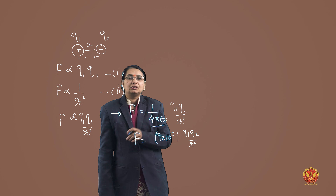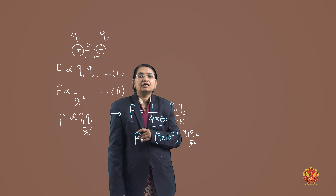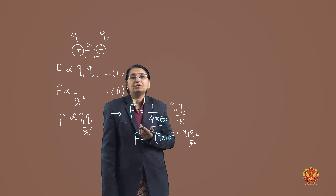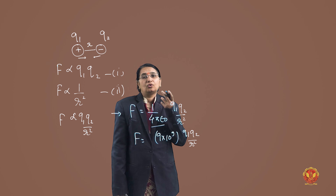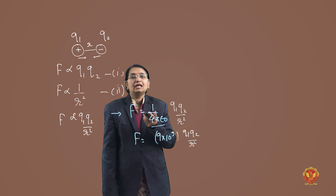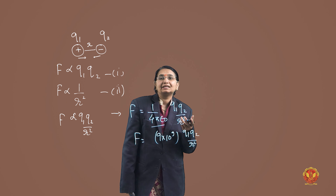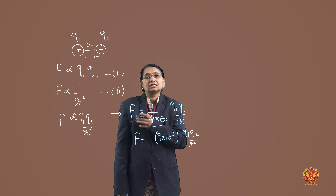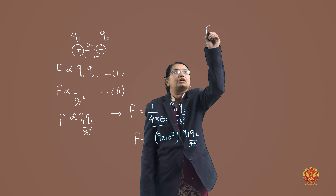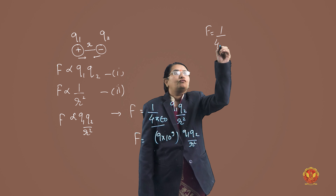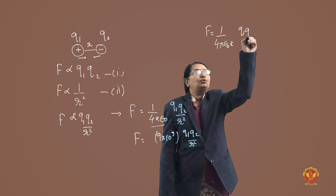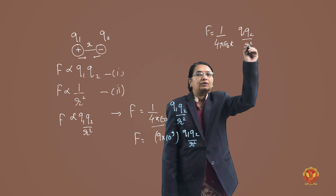We are talking about vacuum or air. If instead of vacuum we have some material medium — like glass or wax — then we need to modify the formula. In that case, the value of F is equal to 1 over 4π·ε₀·k, multiplied by Q1·Q2 divided by R squared.